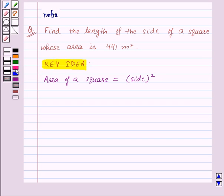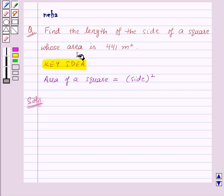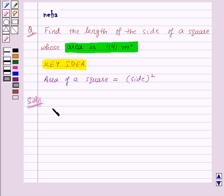Now, let us see its solution. In question, we are given that the area of the square is 441 meter square. So, let us write area equal to 441 meter square.